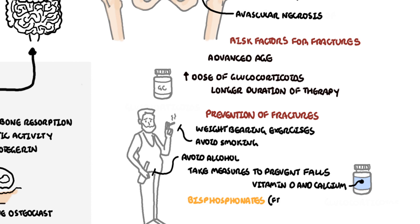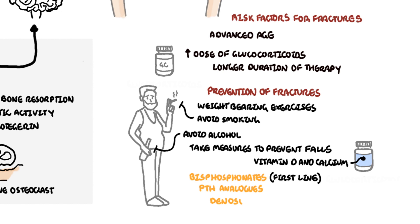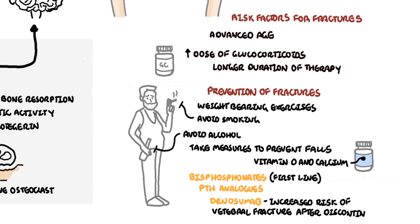Bisphosphonates are first line to prevent osteoporotic fractures. Side effects of bisphosphonates include reflux and esophagitis. Other second-line treatments include parathyroid hormone analogues or denosumab, which is a monoclonal antibody against RANK-ligand. Importantly, if someone is on denosumab — which involves six-monthly injections — there is an increased risk of vertebral fractures if you stop taking it, so it is important to transition safely to bisphosphonates.